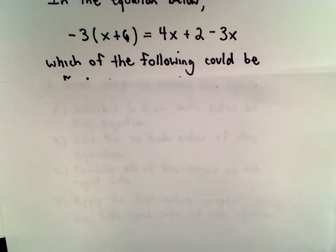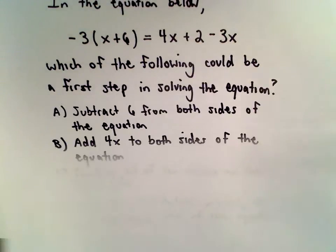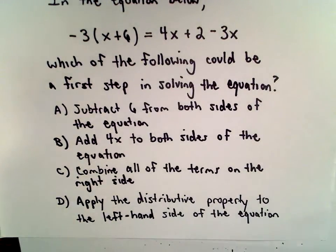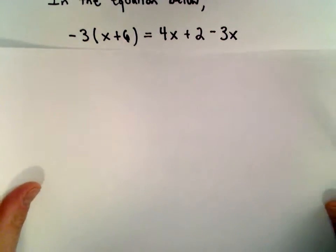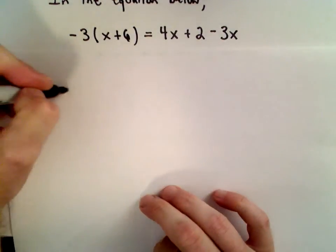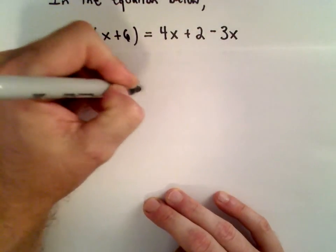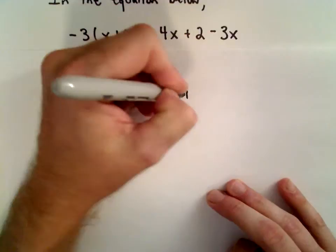If this was a test, I would say it's D. Let's go to the next one. D says apply the distributive property to the left-hand side of the equation. Let's talk about why that makes sense. And just for fun, let's go ahead and do the whole problem.